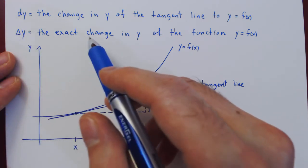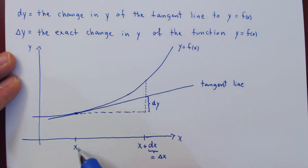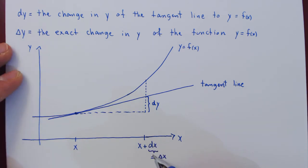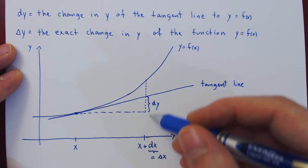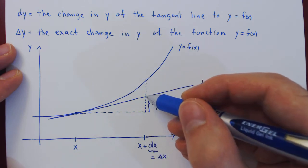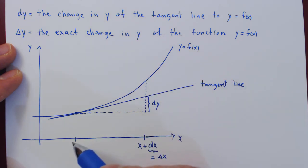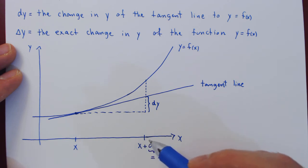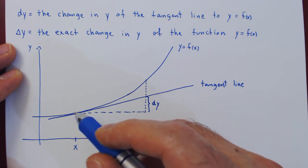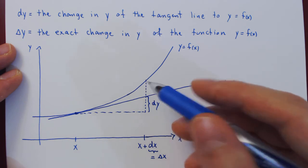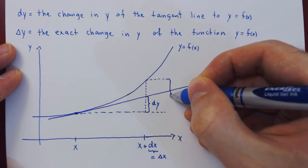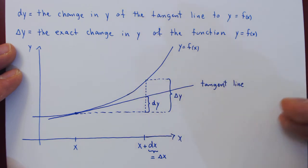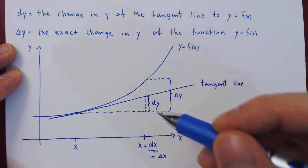Now let's look at delta y, the exact change in y of the function, as x goes from x to x plus dx. The y value of the function at x is the same as the y value of our tangent line. But at x plus dx, the y value of our function is different than the y value along its tangent line. So as x goes from x to x plus delta x, the y value on the function goes from this point up to this point. We can clearly see that this is the exact change in y of the function. So clearly, delta y and dy are different.